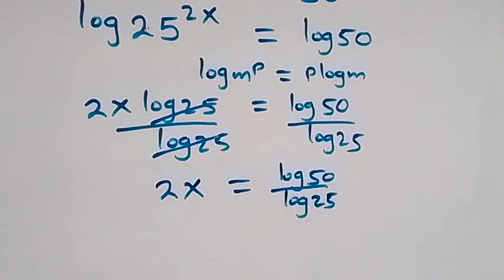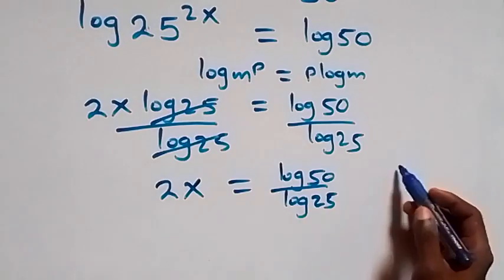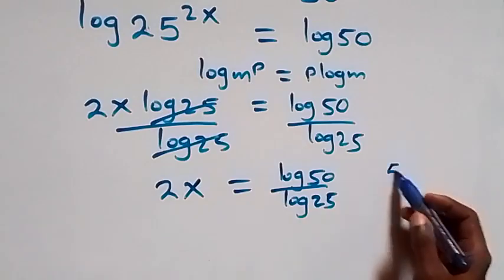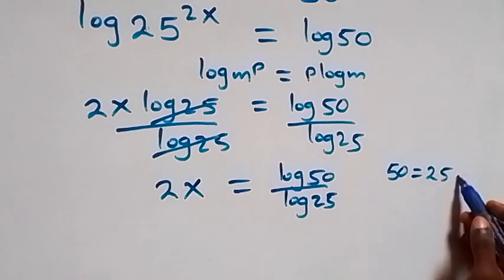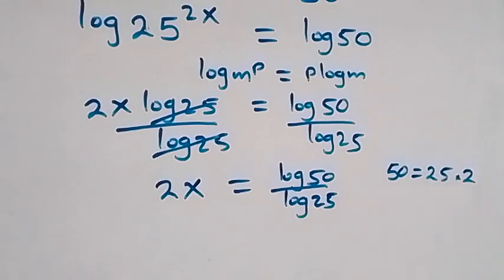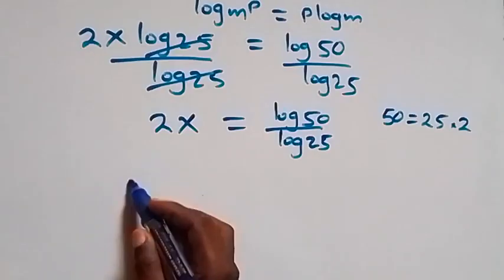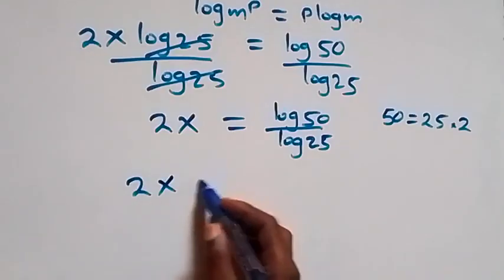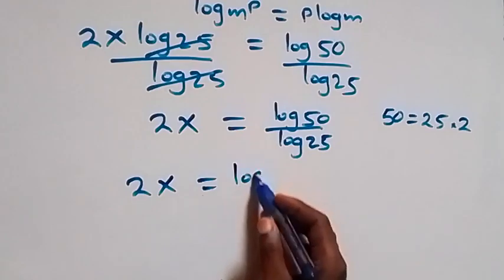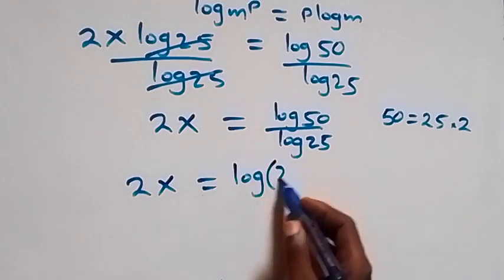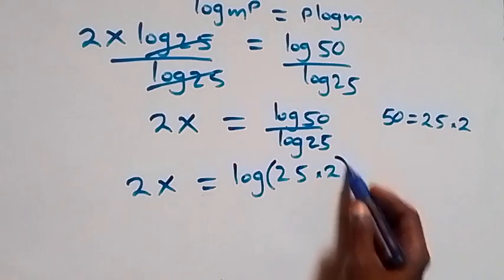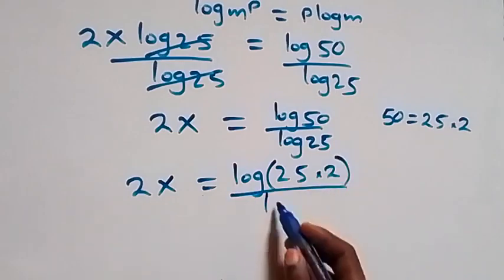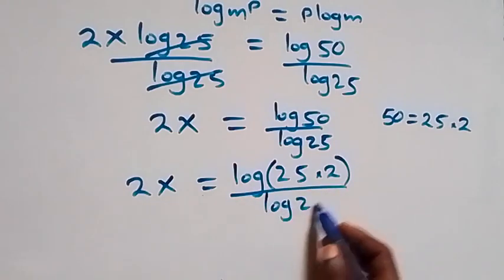We can reduce this further since 50 can be written as 25 times 2. So what we have becomes 2x equals to log(25 times 2) over log 25.